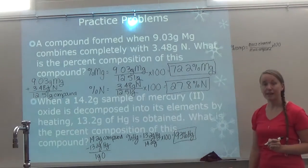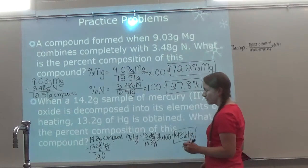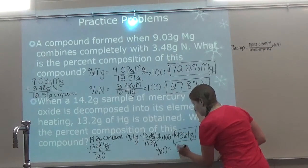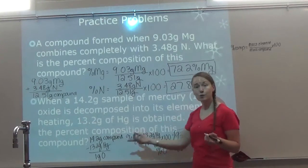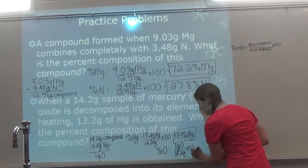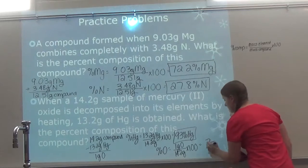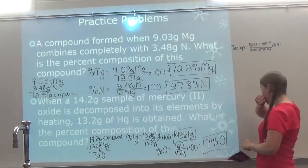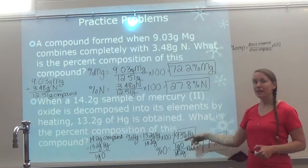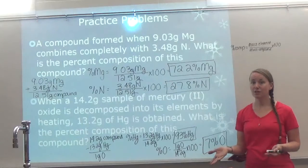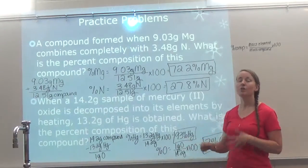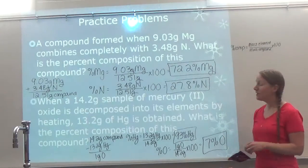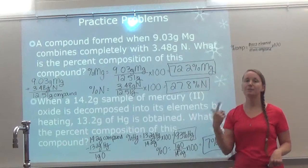For oxygen: 1 gram of oxygen over 14.2 grams times 100, giving about 7% oxygen. Notice 93 and 7 give us 100. Some of you may wonder: once I get 93%, can't I just do 100 minus 93 to get 7%? Yes, you can. However, if you accidentally made a math mistake, you have no way of checking your answer — because of course that plus the other will always give you 100. I always like to do two separate problems and then add to make sure I didn't make any math errors.